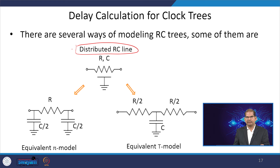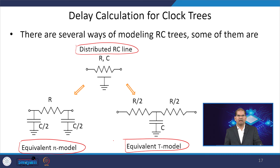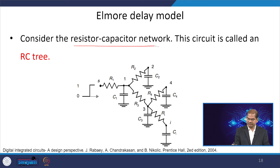If you have a clock network with interconnects, you can analyze it using different RC models. One model is called the distributed RC line, which is more accurate but takes more time to simulate. Since time is also an important factor in chip design, there are equivalent pi models and equivalent T models of the network to do the analysis in less time. Consider an RC network where a step response is given at a source point S, and we are interested in finding the delay from the source node to node I.